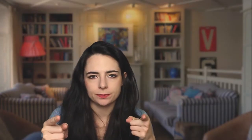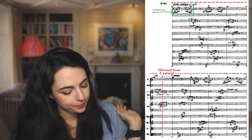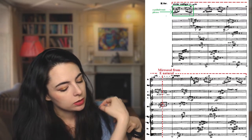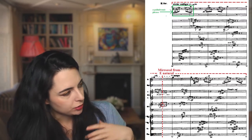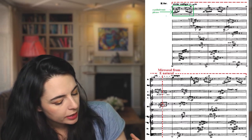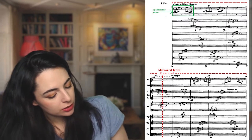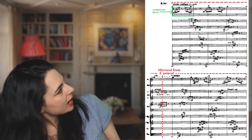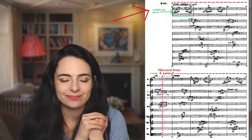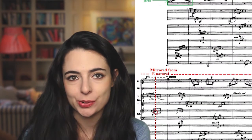Here is an example of a mirror canon in Webern's symphony. The mirror canon is on the E natural, and the second half is a retrograde of the first half. As an additional note, there are palindromic phrases throughout — there are palindromes within larger palindromes.